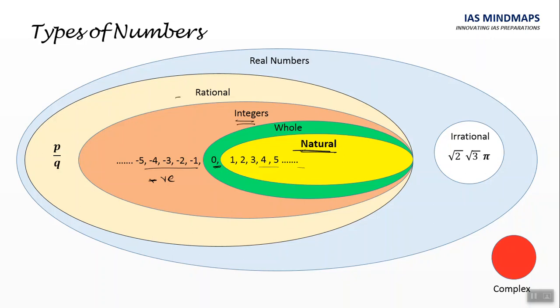These integers are a subset of rational numbers. Any number which can be represented as P by Q is rational number. And another part that is irrational numbers. By adding both rational numbers and irrational numbers, we get real numbers.